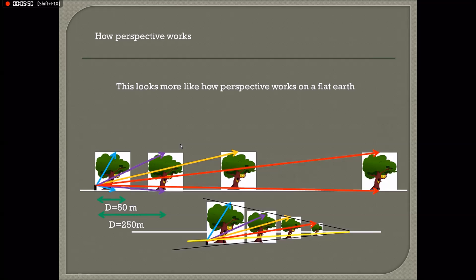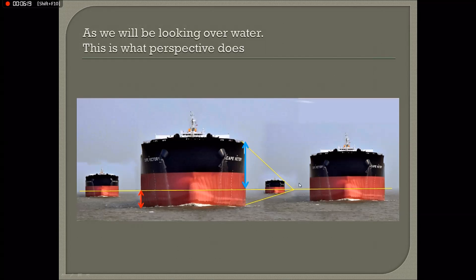Perspective works in a simple way: the viewing angle from the top to the bottom of an object decides how large you see something. The farther something is, the smaller the viewing angle, the smaller you see it — and that helps our brain decide whether something is close or far away. But there is another rule of perspective which is equally, if not more, important.